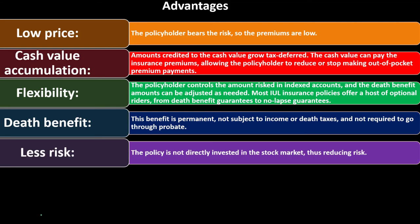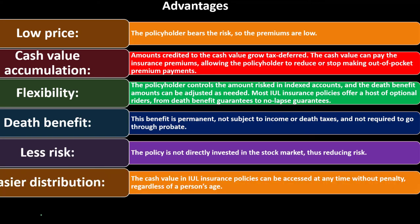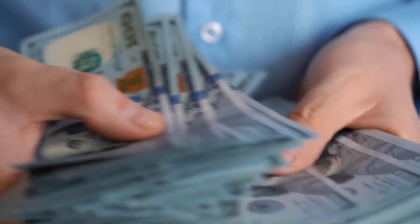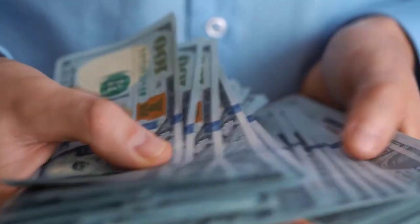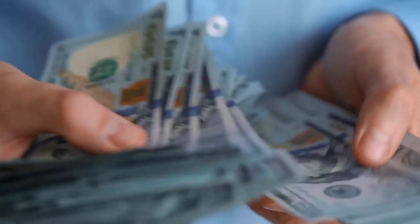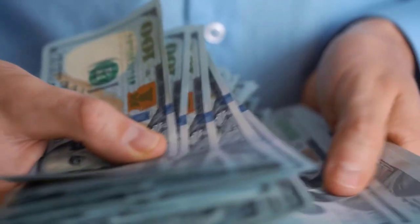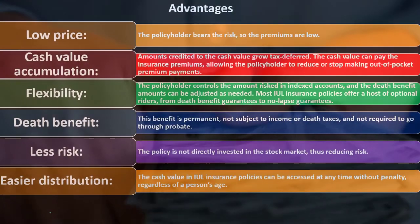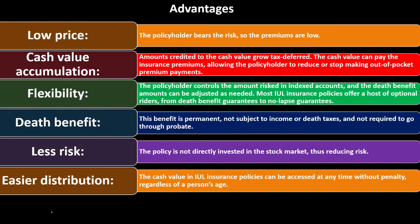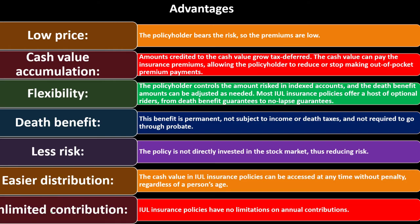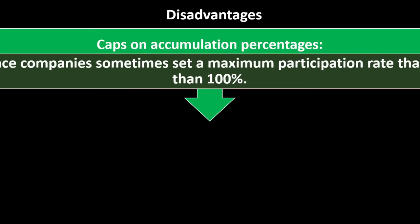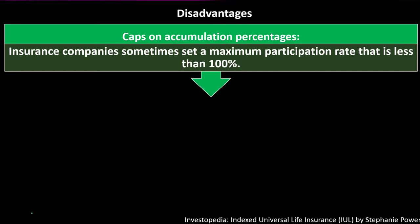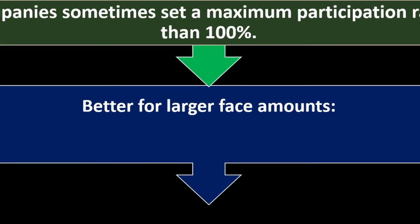Less risk - the policy is not directly invested in the stock market thus reducing risk. That's one benefit as opposed to if you took the money and invested in term insurance and invested the difference in the market, you might be taking on a little bit more risk, although you'd also have more potential for gain because it's probably going to have less fees as you basically invest directly in the market. Easier distribution - the cash value in IUL insurance policies can be accessed at any time without penalty regardless of a person's age. Unlimited contribution - IUL insurance policies have no limitations on annual contributions. Disadvantages: caps on accumulation percentages - insurance companies sometimes set a maximum participation rate that is less than 100%. Better for large face amounts - smaller face values don't offer much advantage over regular UL insurance policies.